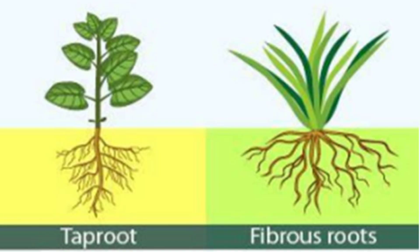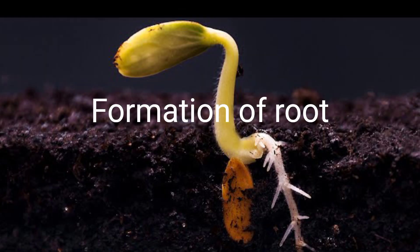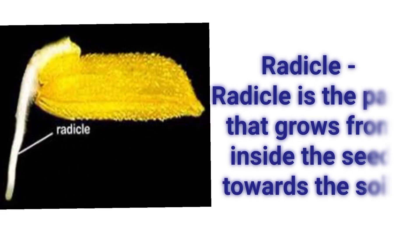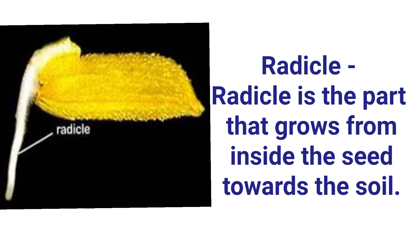In dicotyledonous plants, we see the tap root, and in monocotyledonous plants, we see the fibrous root. See the diagram of formation of root and understand the parts: radicle and plumule. Radicle is the part that grows from inside the seed towards the soil. It forms the root system of the future plant.